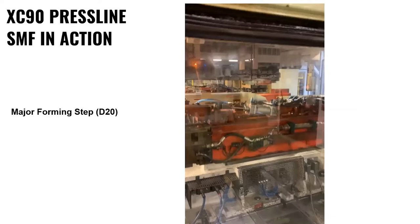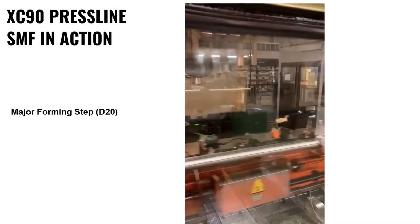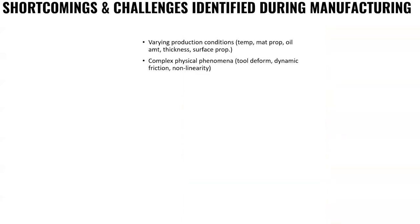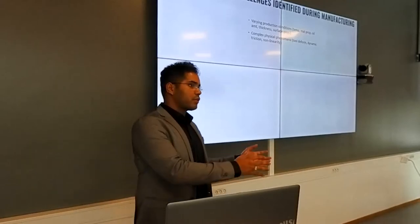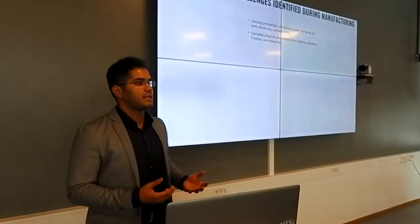I actually have a video to show from the major drawing step. You have the first step where the sheet is placed and the forming stages occur — this is for XC-90. When we went into manufacturing, we did a lot of production visits and discussions with operators. We saw that there were non-stationary conditions during manufacturing: varying temperatures when you start production, after certain strokes. Material properties vary from different batches of coil, oil amounts were different, sheet thickness was different, surface properties were different. This was influencing the output product quality, and it's quite tricky because there are a lot of variables — it's not so evident how exactly they influence quality.